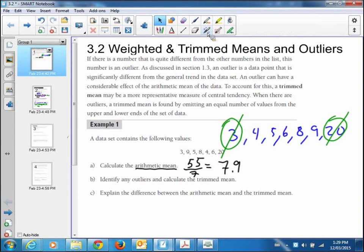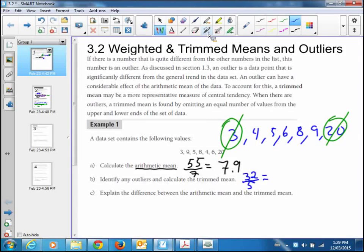Now, identify the outliers. I already did that. I went ahead on B a little bit here. And calculate the trimmed mean. Now, the trimmed mean is adding up only these middle numbers: 4, 5, 6, 8, and 9. Added together will give you 32. You divide by the five numbers that you're using in the trimmed mean. And that gives you 6.4.